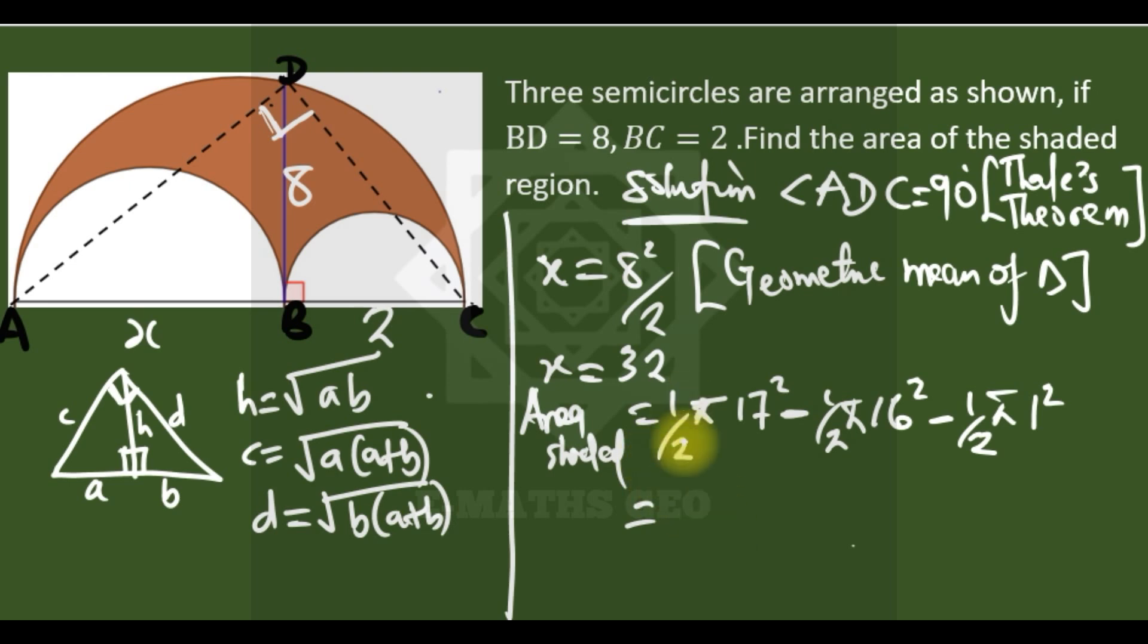As you can see, there is π over 2, π over 2, π over 2. Factor π over 2. So we are left with 17 squared minus 16 squared minus 1 squared. We can see that this is difference of two squares, so we can write it as 17 plus 16. 17 plus 16 is 33.